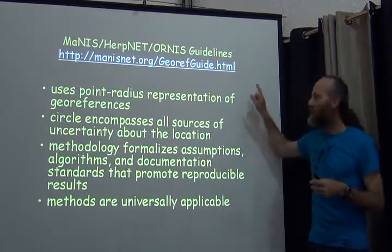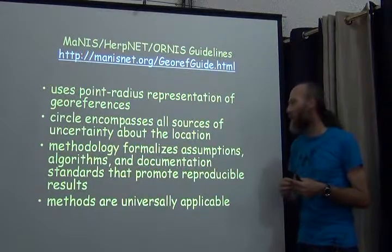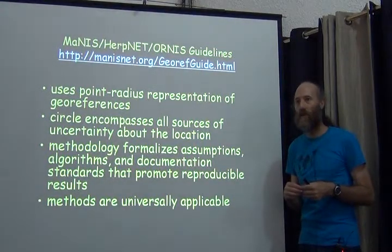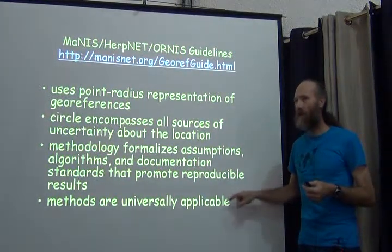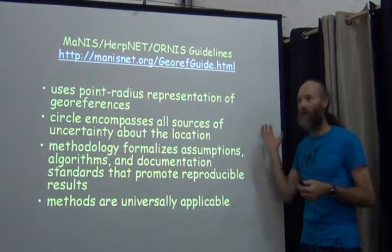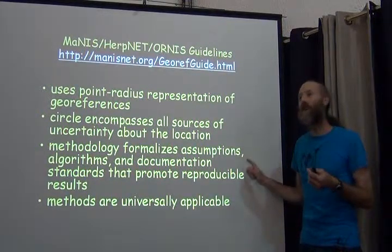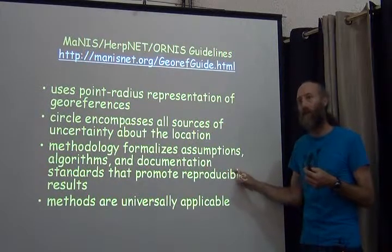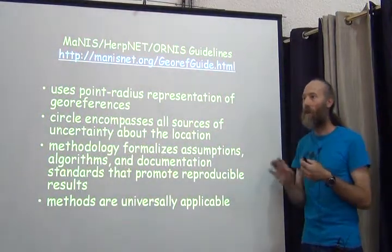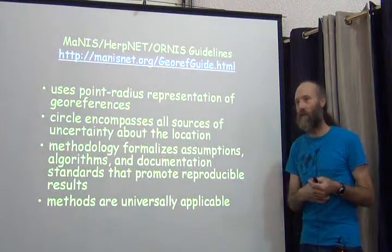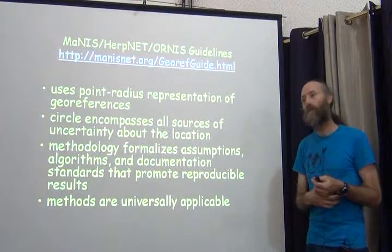Those methods are usable universally — they work for marine georeferencing, for fish in rivers, and for non-biological things. The rules are generic. But importantly, if the rules work for baskets as well as fish, then these methods are not taking into consideration anything about life histories, environments, or species. These georeferencing methods are a first pass based only on the location information, not on the taxonomy.